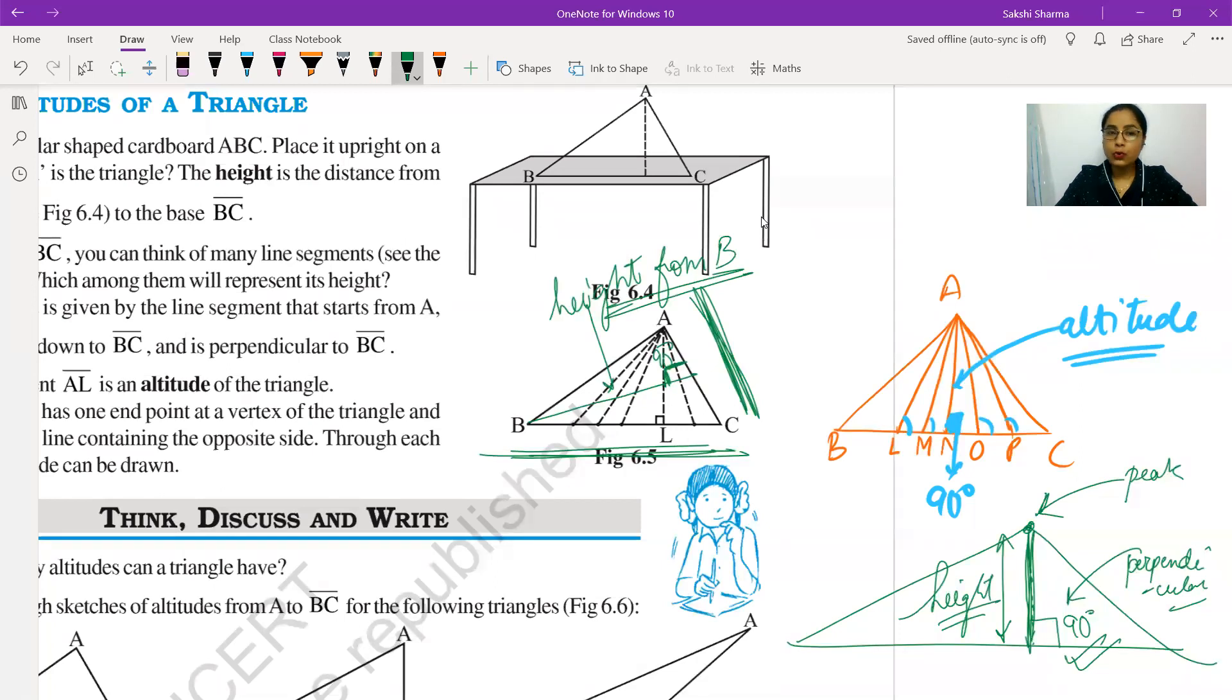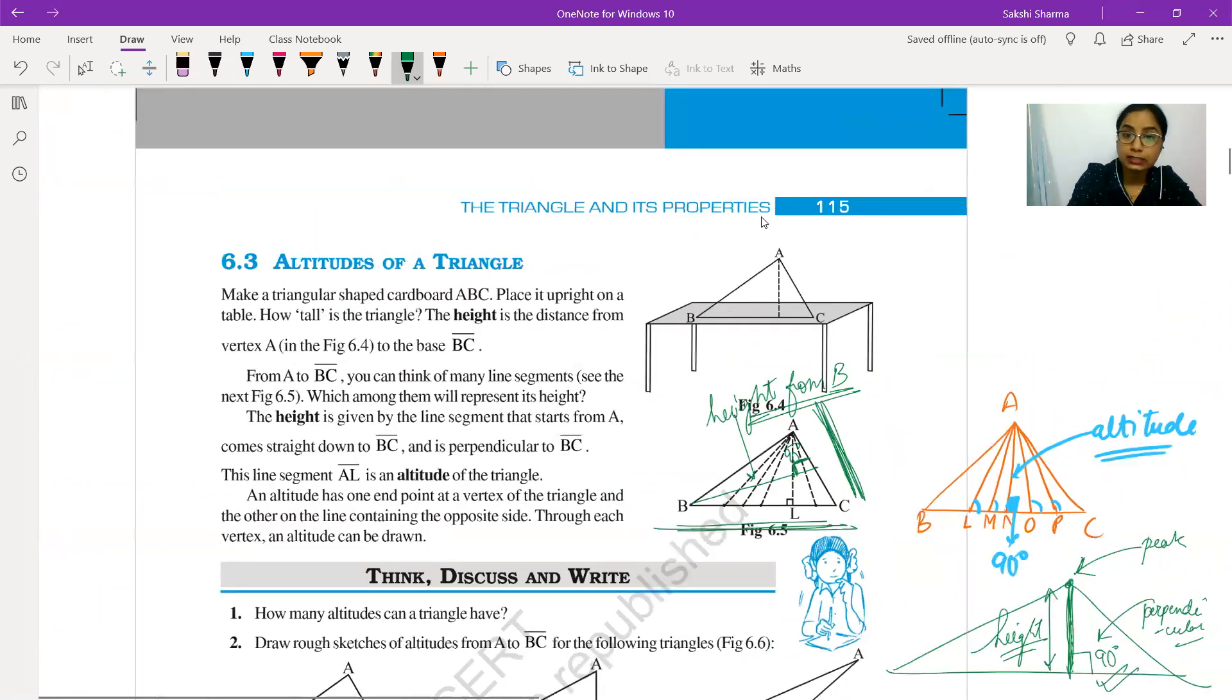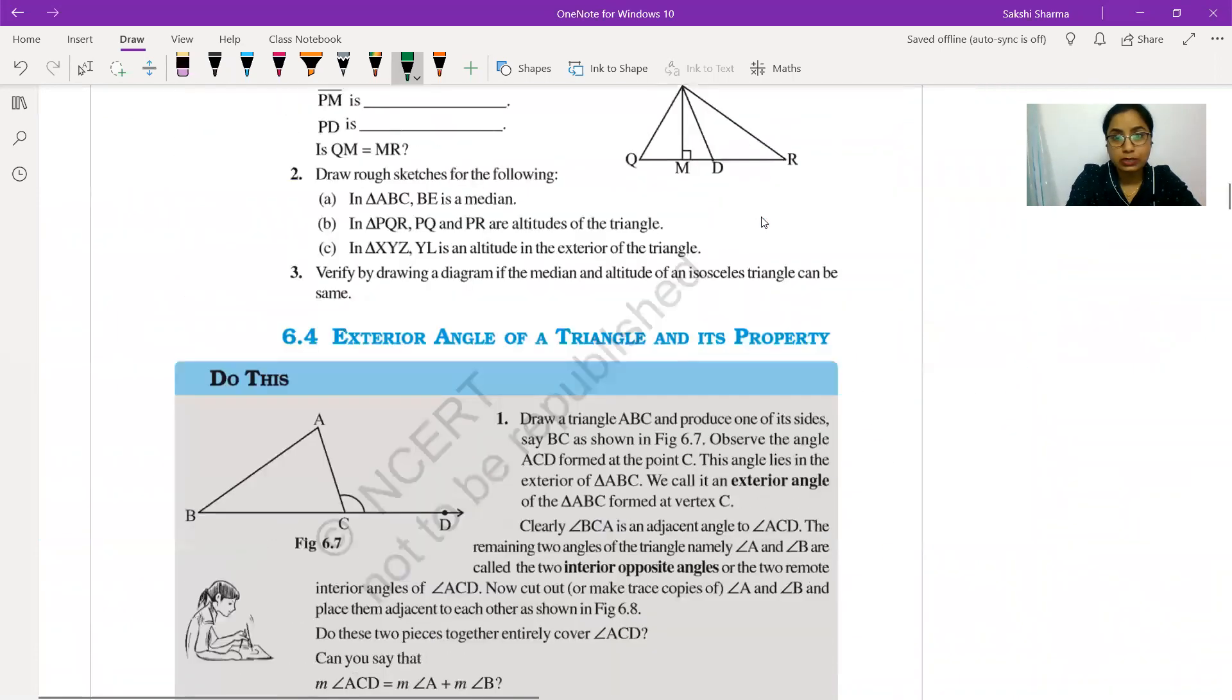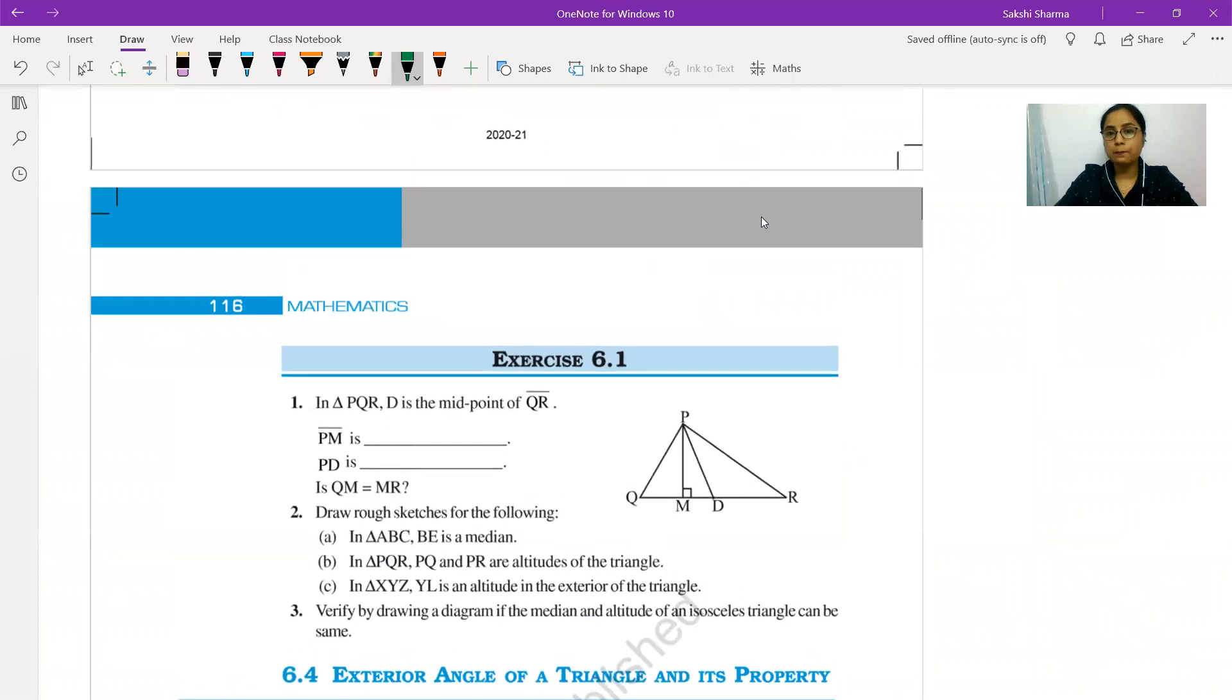The only thing you need to remember is altitude will always make a 90-degree angle with the opposite side. It will start from one of the vertices - it has to start from a vertex, you have to go up to the opposite side, and if it makes a 90-degree angle there, you will say that line segment is the height of the triangle or the altitude of the triangle. This is important in the exercise. I would like you to take the exercise so you can see the importance. Now look at this diagram here.